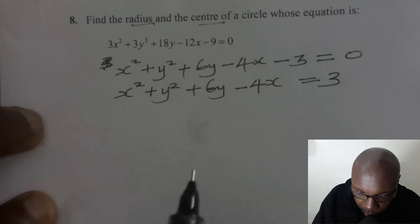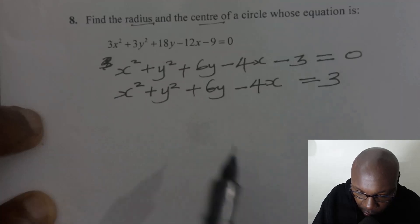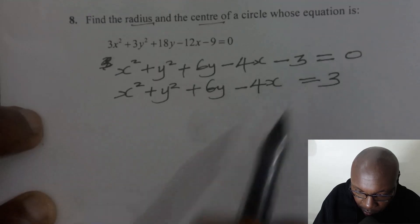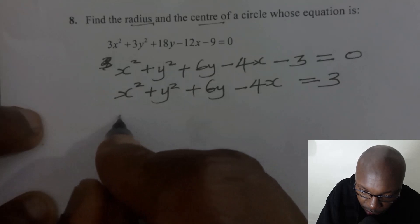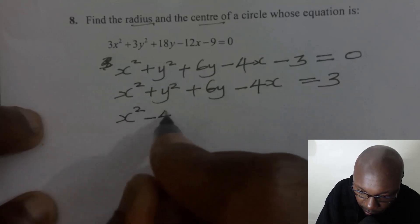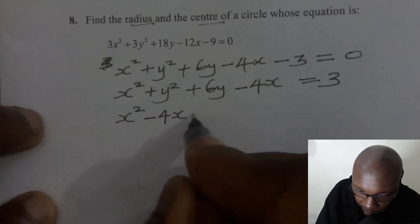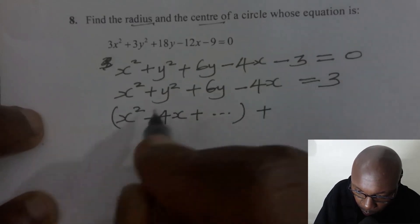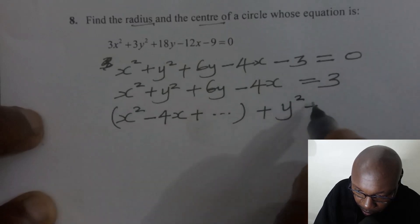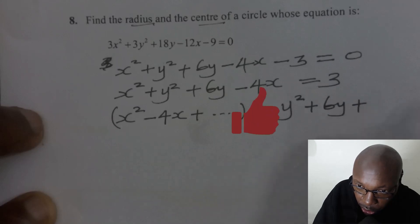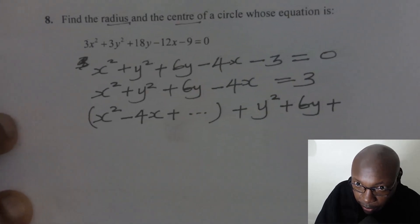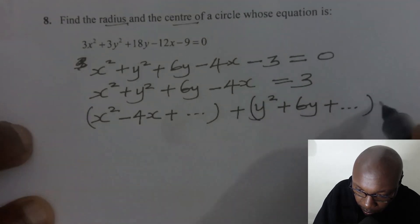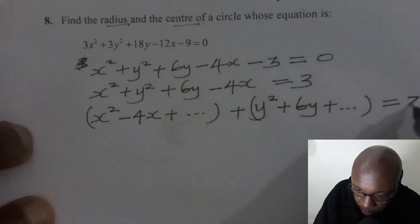Now the next thing we're going to do is to complete the incomplete squares here. When you look at x squared minus 4x, we need to complete that square. So we have x squared minus 4x, and we have to complete that square. Then for y, we have y squared plus 6y, and we also need to complete that square. Then everything equals to 3.